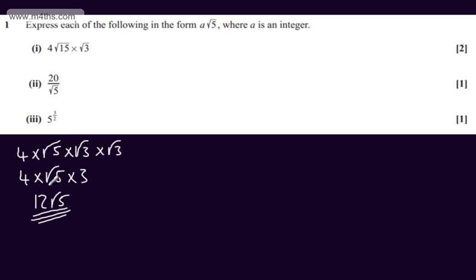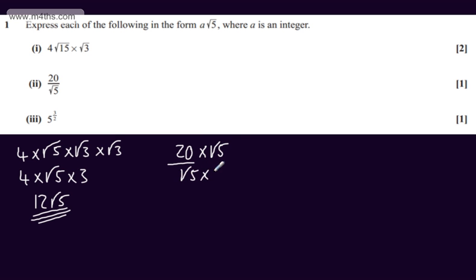There are a few different approaches you could take. In the second part for one mark, we have 20 over root 5. We can rationalise the denominator of the fraction, so I'm going to multiply the numerator and denominator by root 5. In the numerator that gives me 20 root 5, and in the denominator we're going to have 5. 20 over 5 is 4, so we can write 4 root 5.